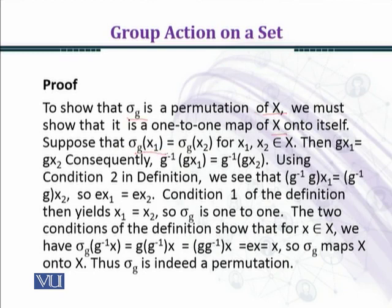Suppose that sigma G X1 equal to sigma G X2. Just as you know, one-to-one condition is one-to-one condition. By definition, we have images equal to X. And we want to prove that elements are also equal. That is, X1 is equal to X2. We intend to prove this. For X1, X2 belonging to X, then GX1 equal to GX2. We just apply the definition of sigma G on both sides.